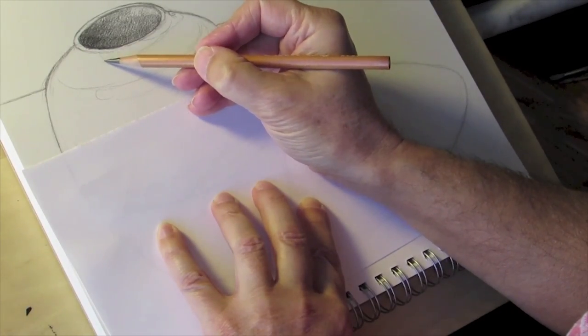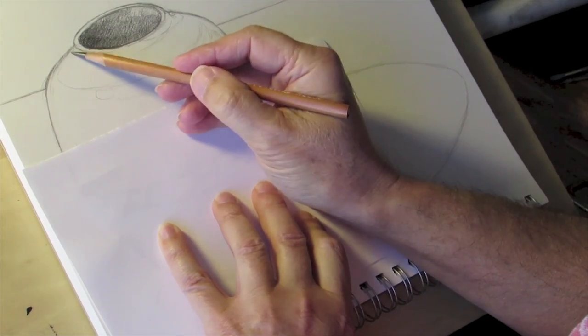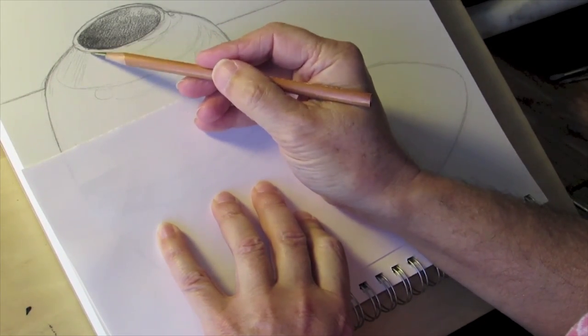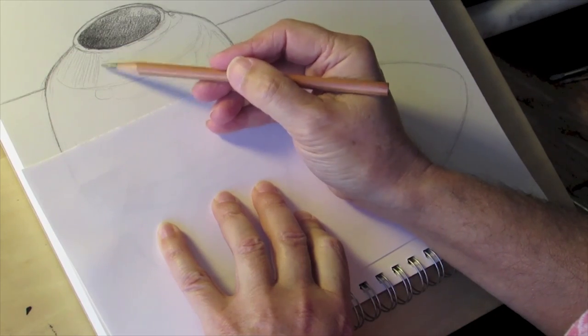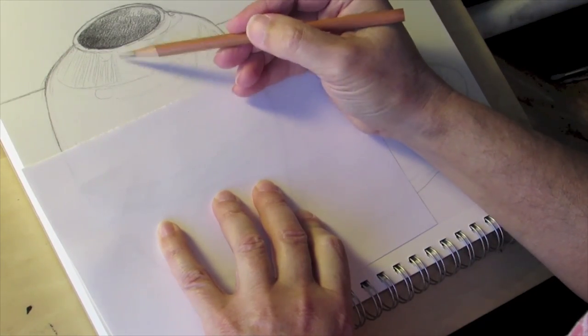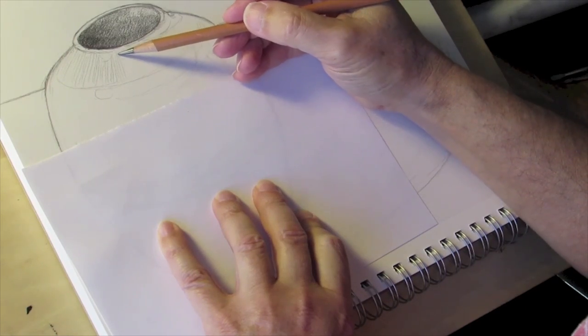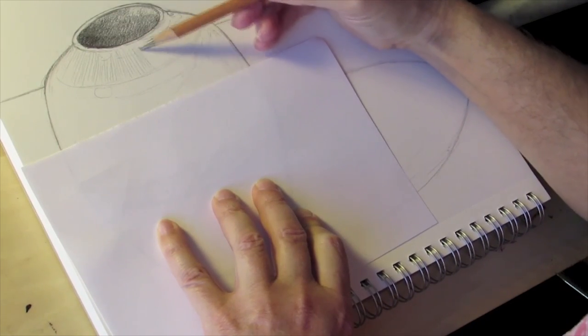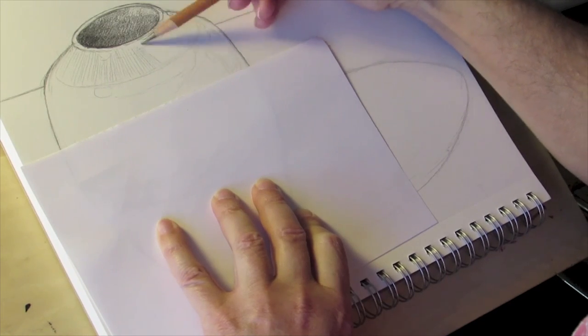Earlier I delineated the shape of those highlights, so now I'm going to start introducing a little bit of tone in around that to eliminate the white of the paper everywhere except in that area where I want that highlight to be.